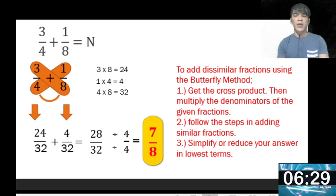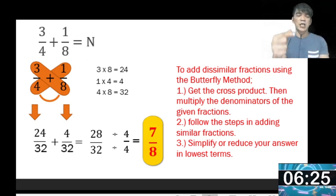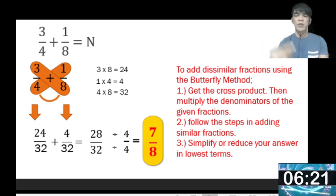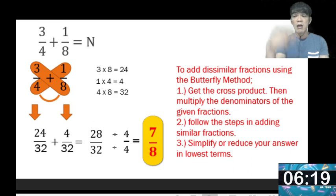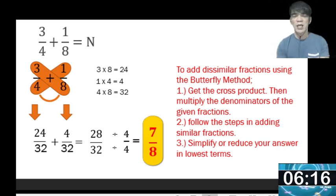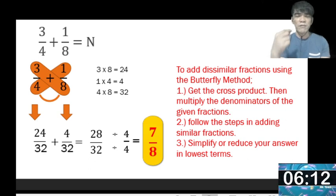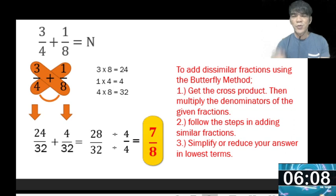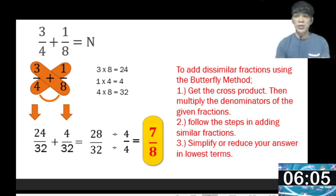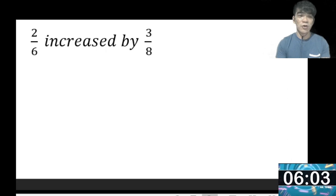Here is one clue to tell whether a fraction is in lowest terms. Look at our answer: the numerator is 7 and the denominator is 8. What can you say about them? They are consecutive — in Tagalog, magkasunod. When the numerator and denominator are consecutive, the fraction is already in lowest terms. Is that clear, children? Let's go to the next example.